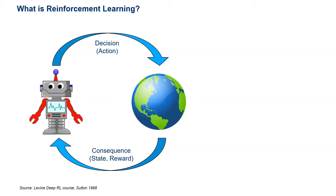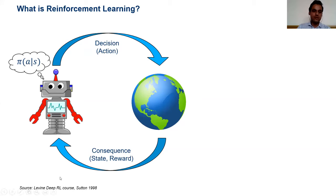The state of the environment will change, and the agent will also receive a reward which tells it how good or bad the action it took was. It's a very simple concept based on the idea that if you reward the right behavior and discourage the undesirable behavior, this leads to behavioral change — we have many examples of this in behavioral psychology. The goal of the agent is to learn a policy — a function that takes in some state and outputs an action. The policy can be stochastic or deterministic.